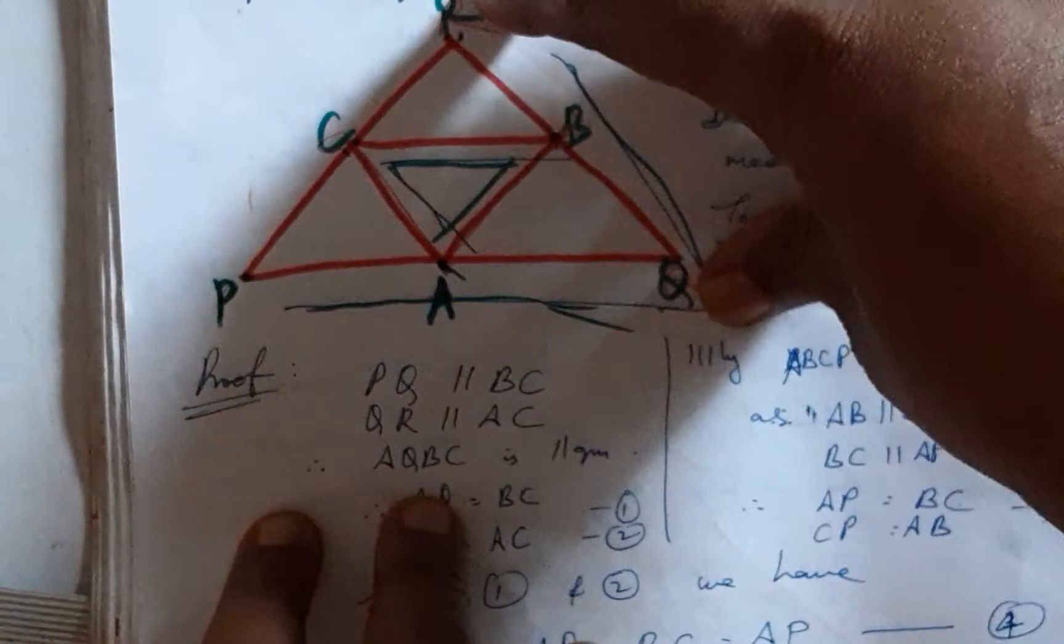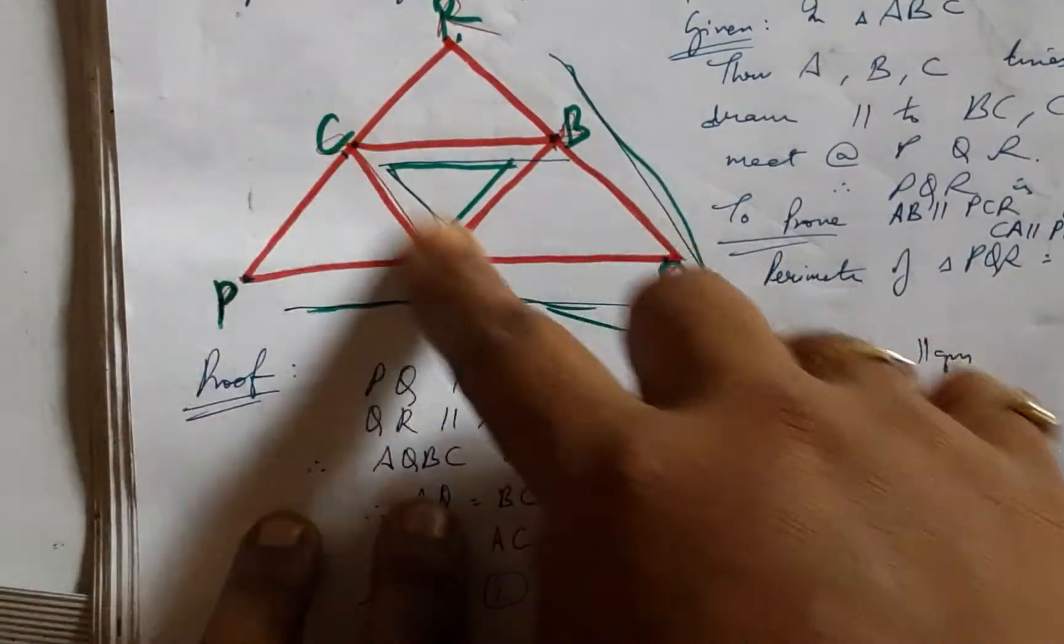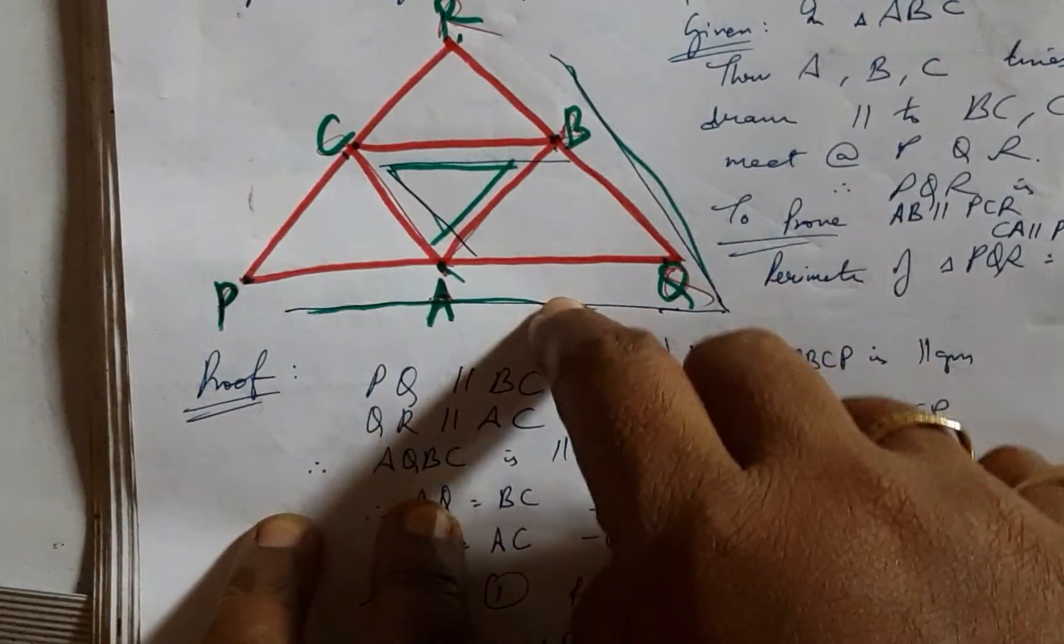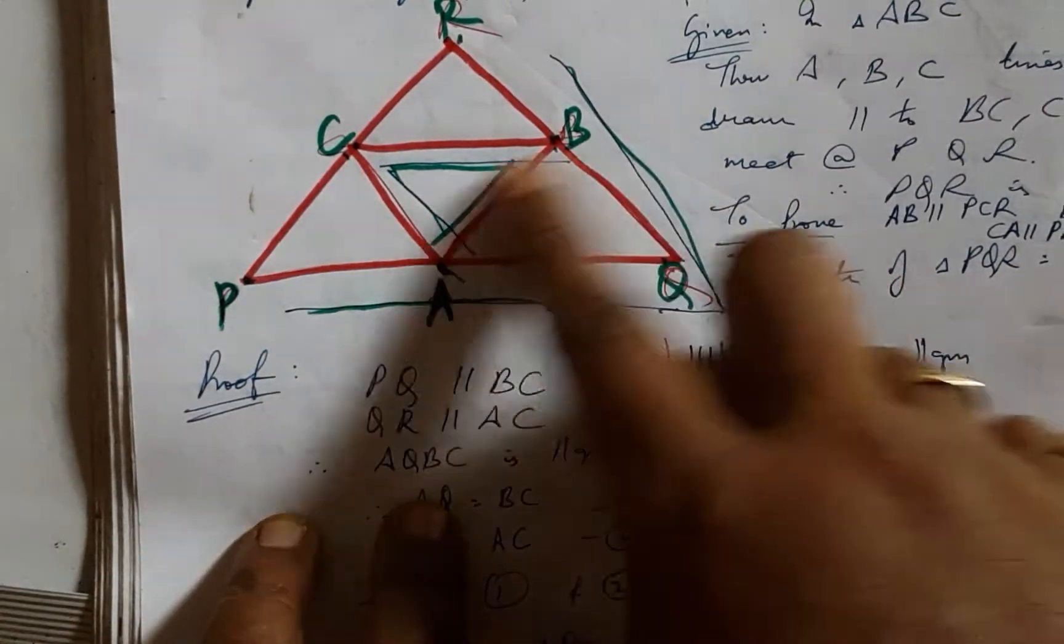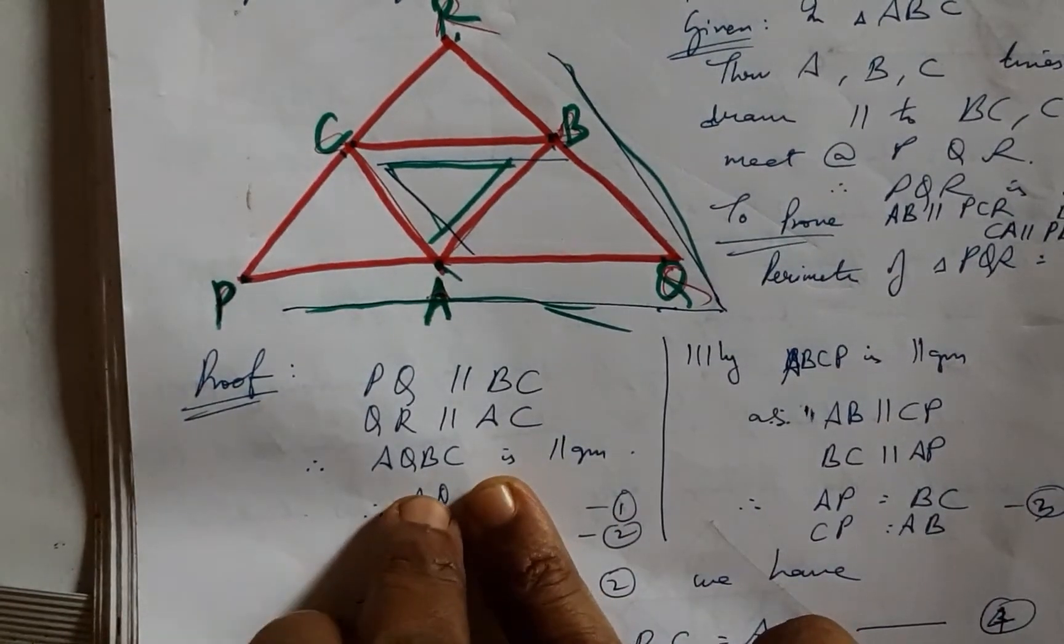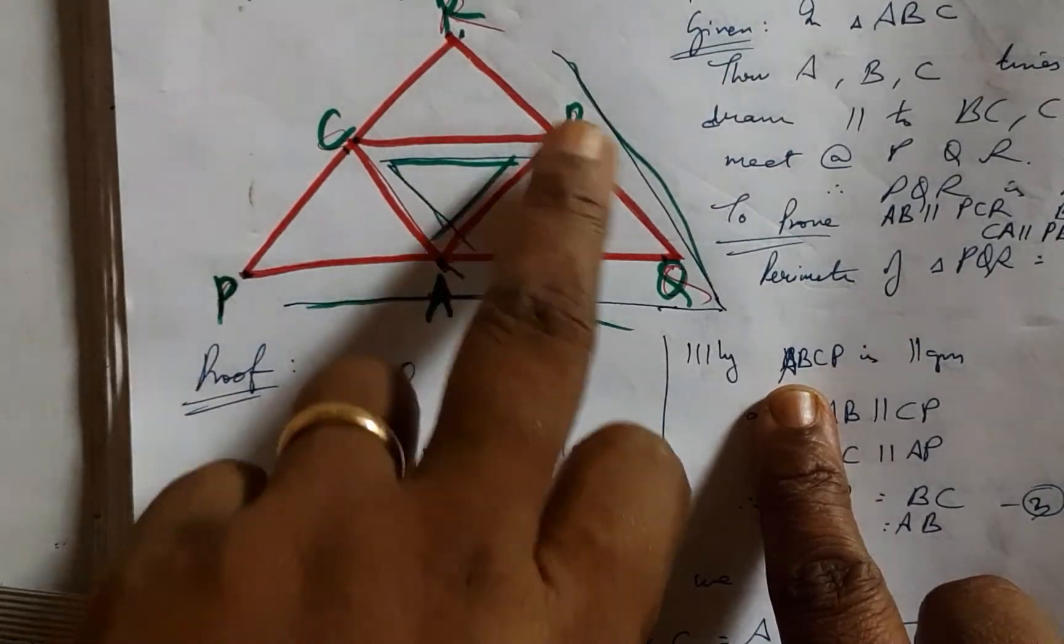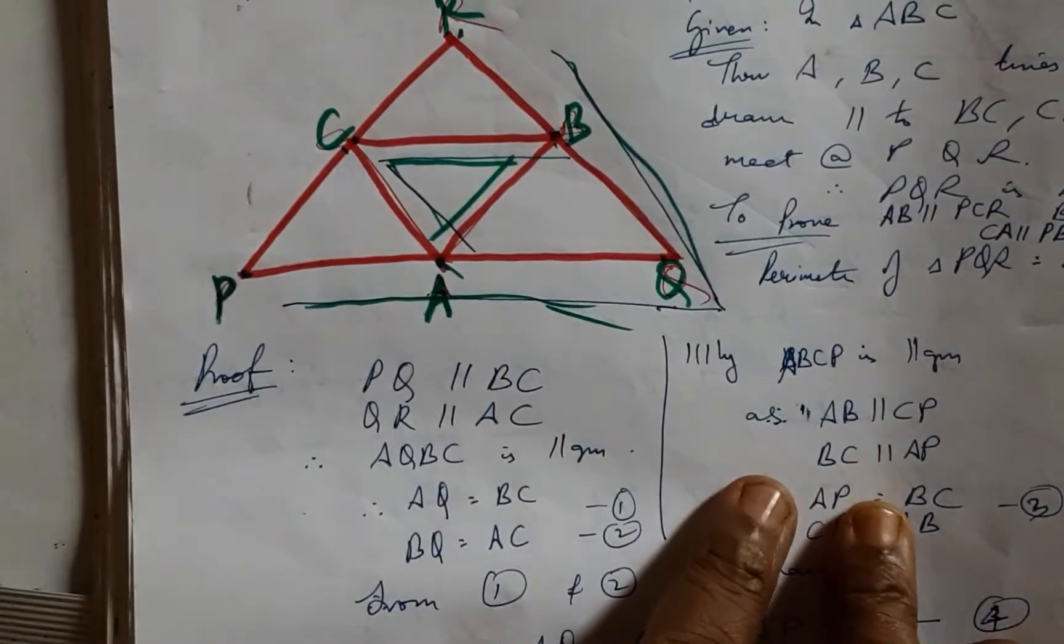And that is how AQBC happens to be a parallelogram. Also, ABCP in similar terms has been established to be a parallelogram.